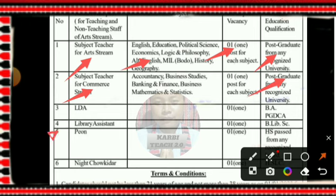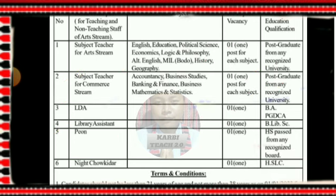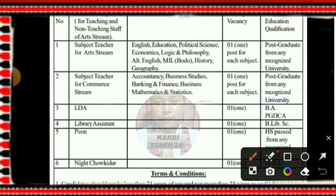Number three is the LDA subject post; the qualification is BA with PGDC from SIDO. Number four is the librarian assistance post, requiring B.Lib.Sc qualification from SIDO.